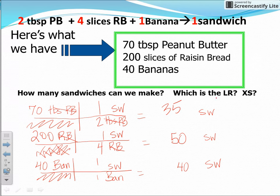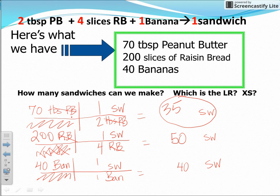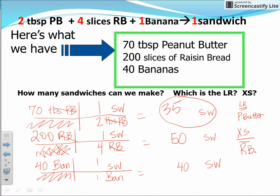The question asks which is the limiting reactant. The peanut butter runs out first because it only lets us make 35 sandwiches — the fewest of all three. Once we've made 35 sandwiches, we have no more peanut butter, so it limits us. Therefore, the limiting reactant is peanut butter. The excess reactants are the raisin bread and the bananas.